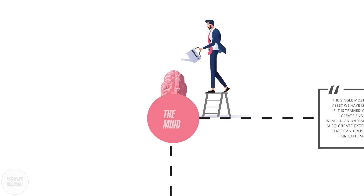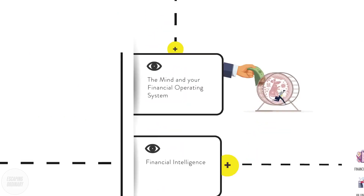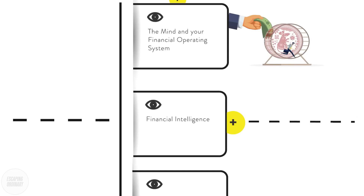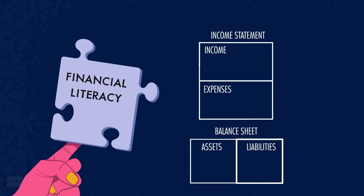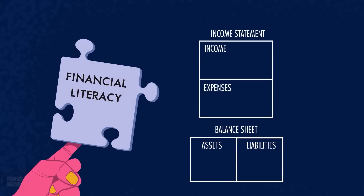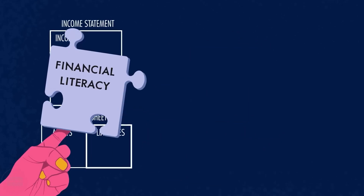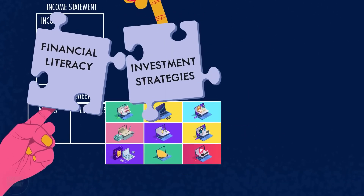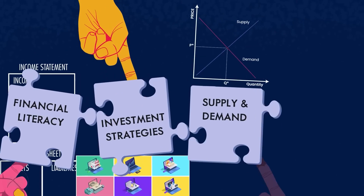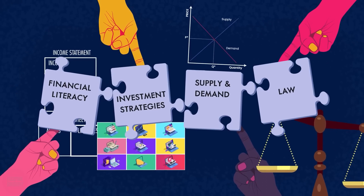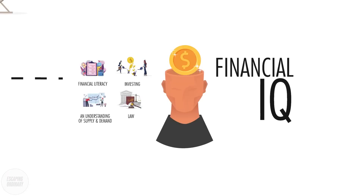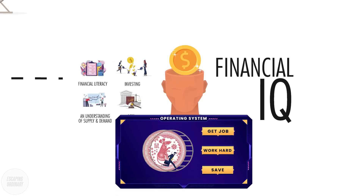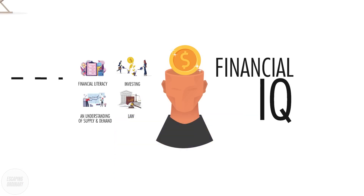In today's information age, your greatest asset is your mind. The old ways of making money and getting rich don't work today. Developing financial intelligence is the key to finding and creating profitable business opportunities. To gain financial intelligence, you need to learn the following: financial literacy — the ability to read and understand financial statements; investment strategies — investing is the science of money making money; an understanding of supply and demand; and an understanding of the law — be aware of all state and federal regulations and always play by the rules. Gaining financial intelligence will allow you to see opportunities outside of the get-a-job, work-hard-and-save model.